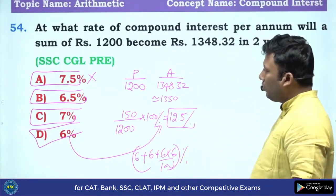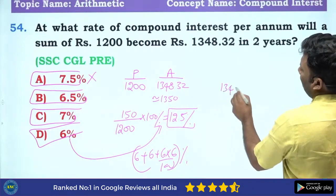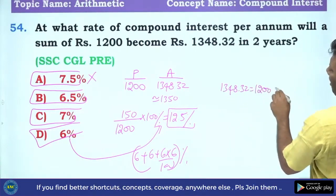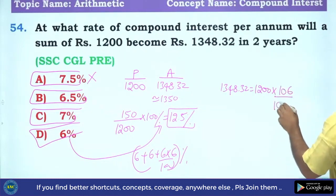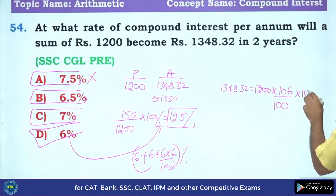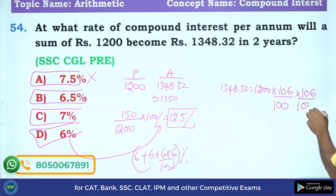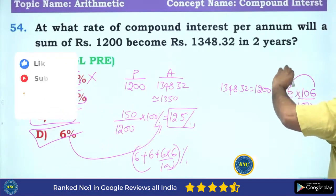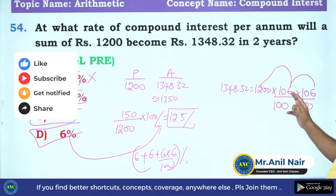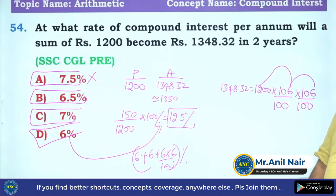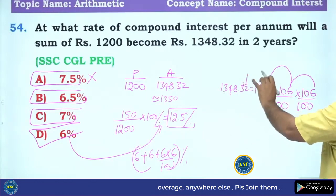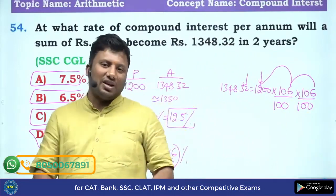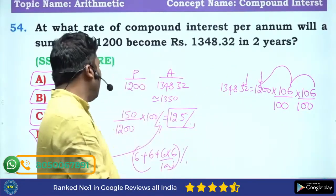Actually you don't need to do all these steps. The amount is 1348.32 and initially it is 1200. If it is a 6% increase — 106 by 100 — applying it twice: 6 sixes are 36, unit digit is 6; then 2 into 6 gives 6, sixes are 36, 36 into 2 is 72 — rightmost non-zero digit is 2. It is matching the given amount. So the answer is 6%.